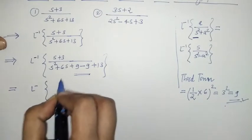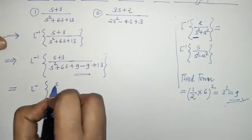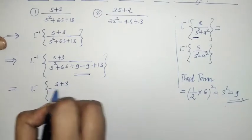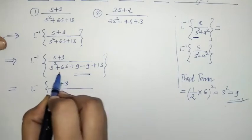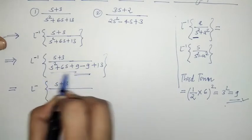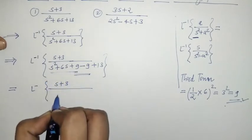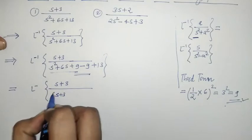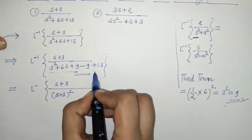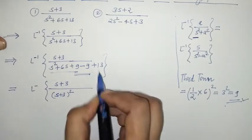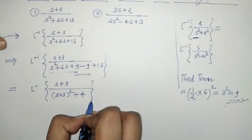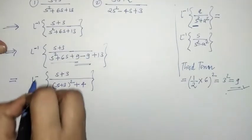Now we can check that this is a perfect square: (s + 3)². And on simplification, −9 + 13 gives us 4. So the denominator is (s + 3)² + 4, which equals (s + 3)² + 2².